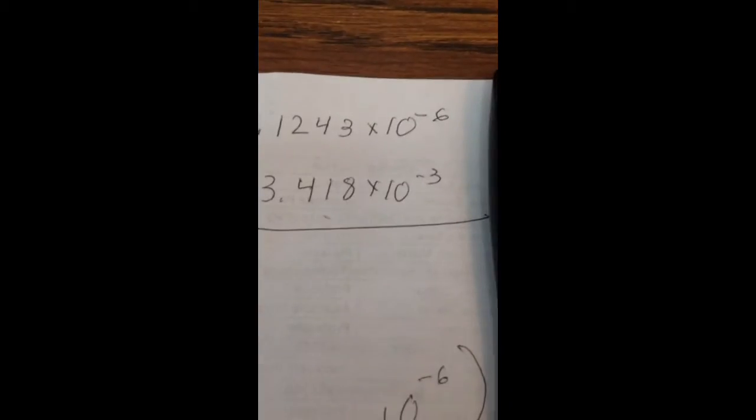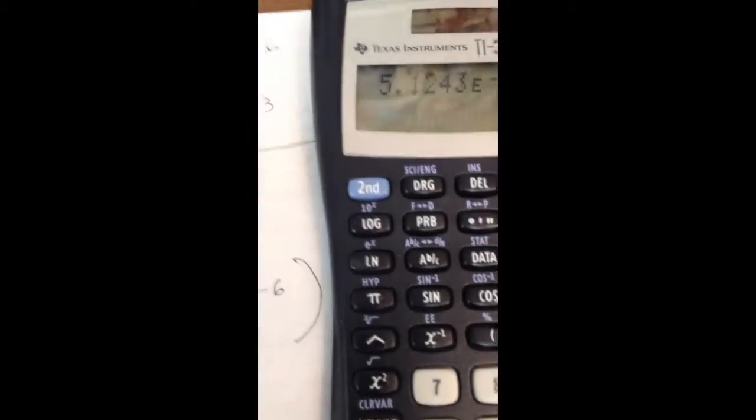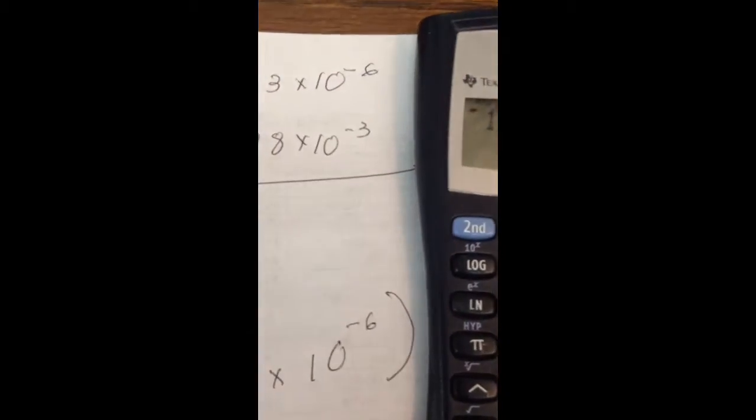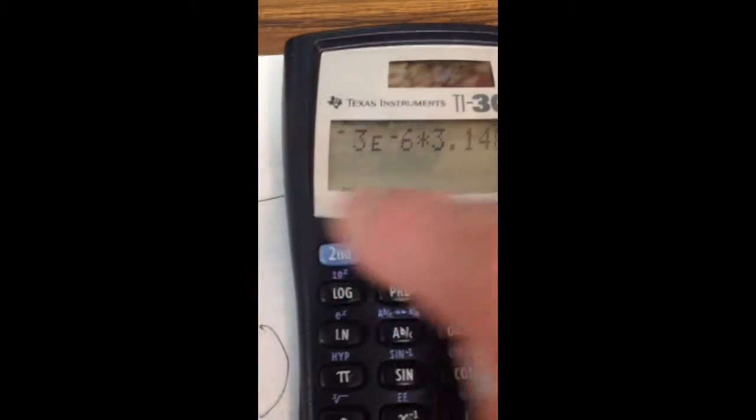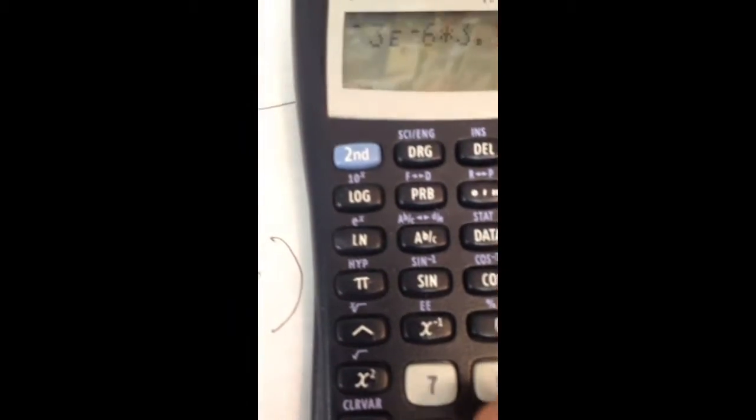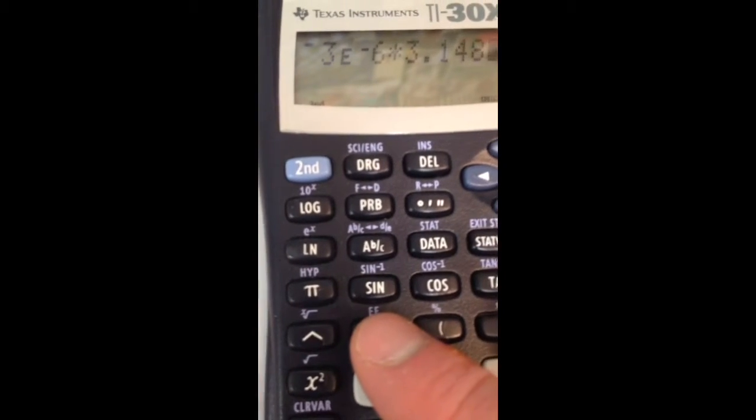Then my next number, 3.418. And I've got times 10 to the negative 3rd. So I'm going to hit my 2nd button again. That puts me in shift, so I hit the EE, which is my x to the negative 1 key. EE and negative 3.